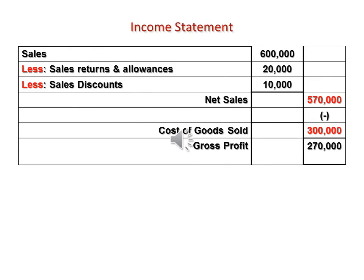The first stage of preparing the income statement ends at gross profit. Gross profit is calculated as: sales $600,000, less sales returns and allowances $20,000, less sales discount $10,000, giving net sales of $570,000. Then less cost of goods sold of $300,000, so gross profit amounts to $270,000.